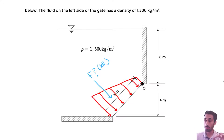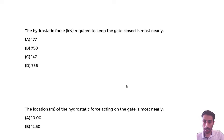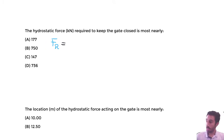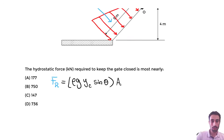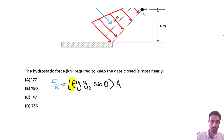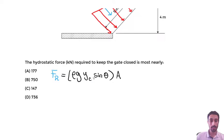The major equation you need to know is the hydrostatic resultant force equation: FR = ρ·g·yc·sin(θ)·A. Let's identify what we have and what we don't. We have the density — 1500 kg/m³ — and g = 9.81 m/s². We do not know yc or theta yet, but we do know the area.